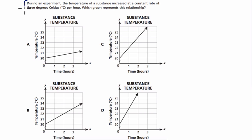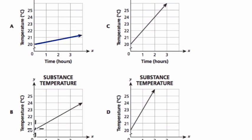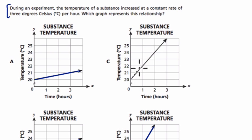During an experiment, the temperature of a substance increased at a constant rate. So that's why we see all these lines here. We're just seeing different constant increases of some kind of substance, right? And again, the reason you know it's constant is because the lines are straight. So if the lines are straight, the temperature increase is constant.